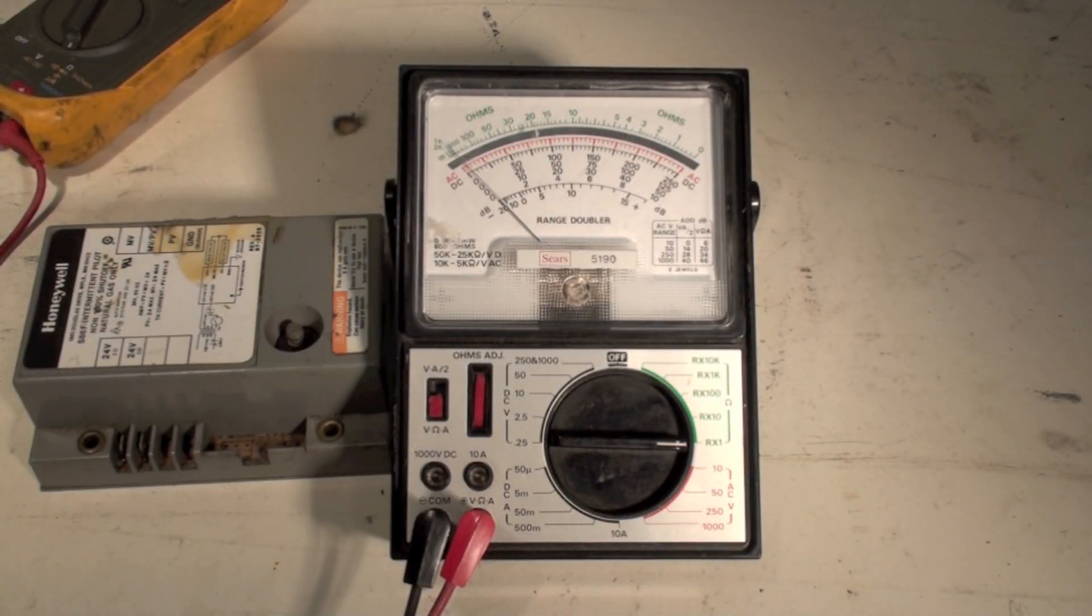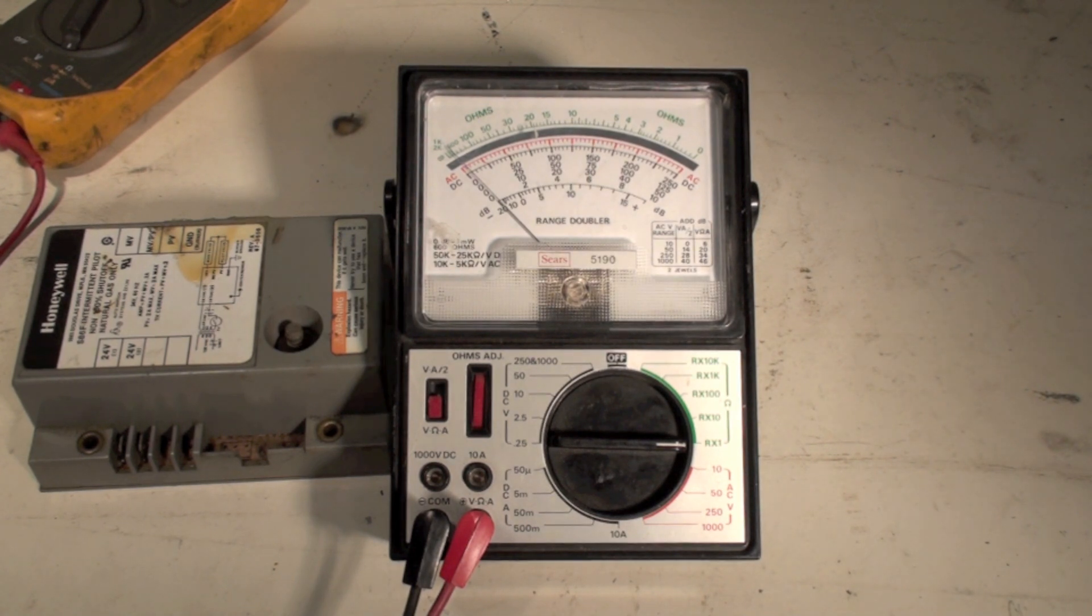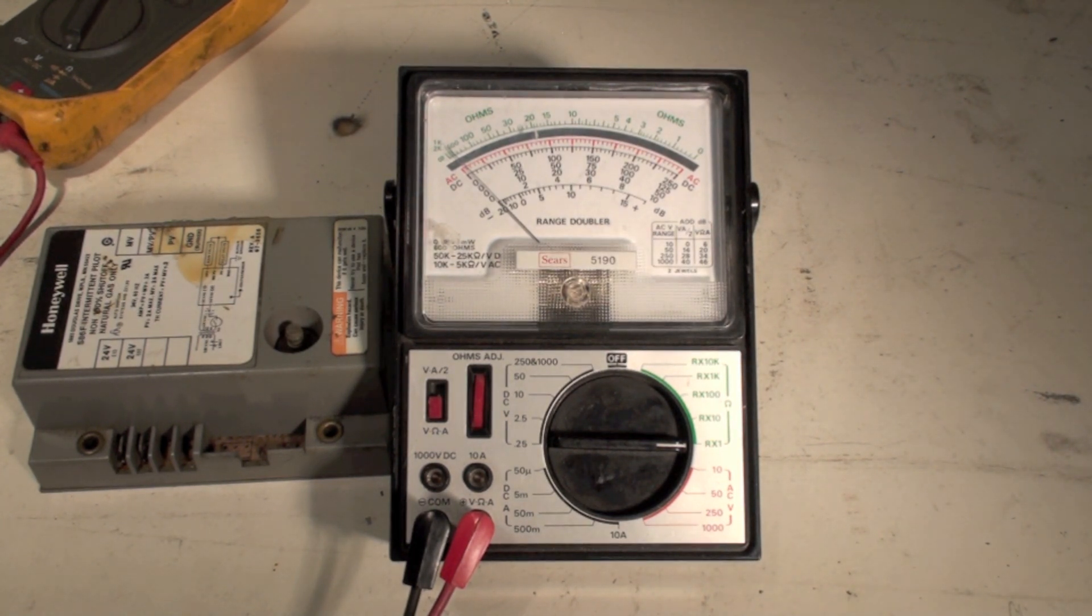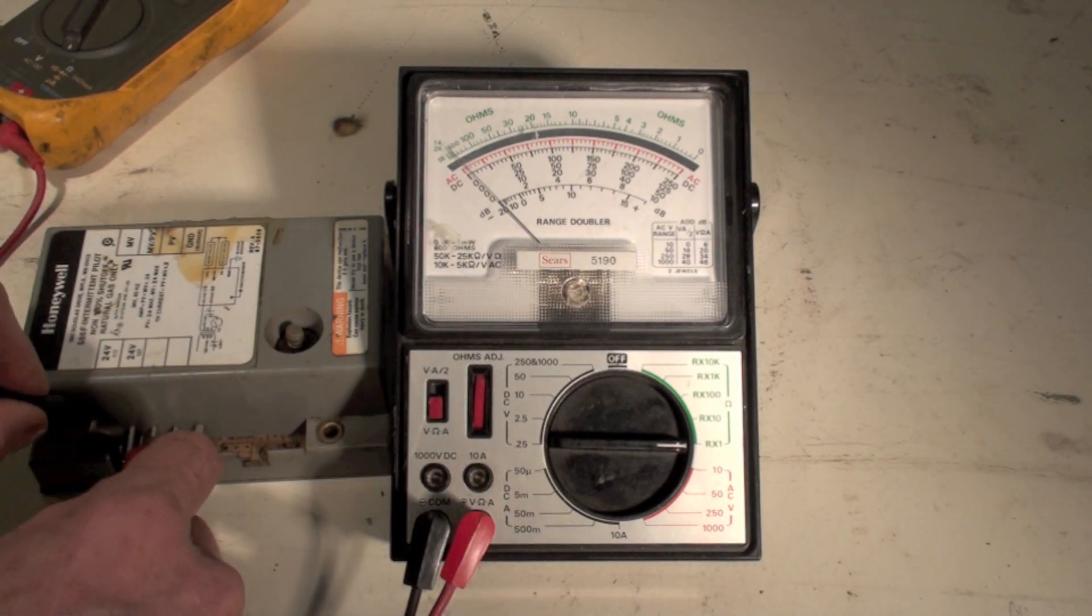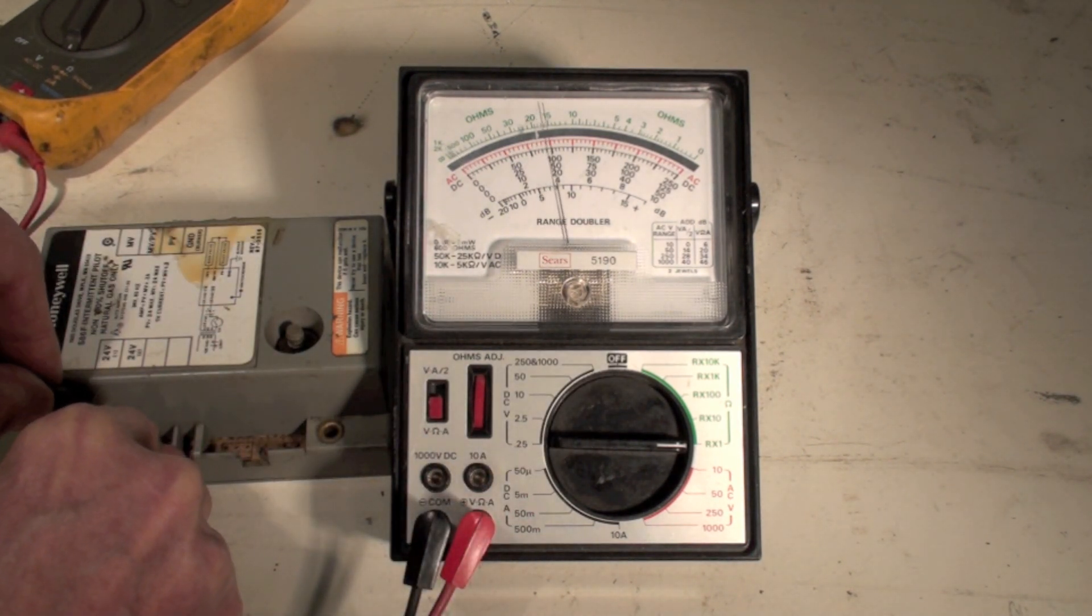Okay, now I'm going to test resistance with this analog meter, and I've got a little load here that I'm going to put it across. I'm going to take these two probes, and I place them here. Now, I'm showing, looks like about 14.